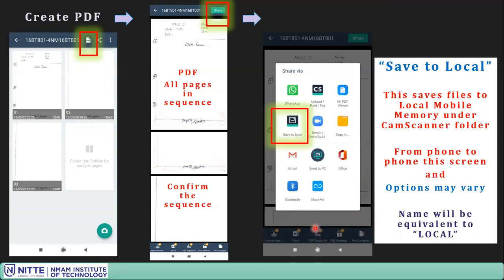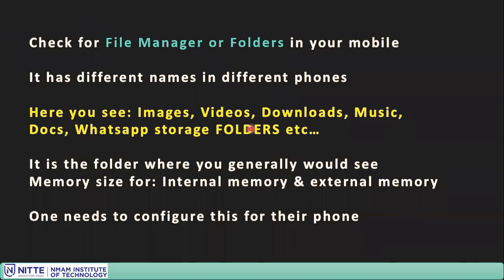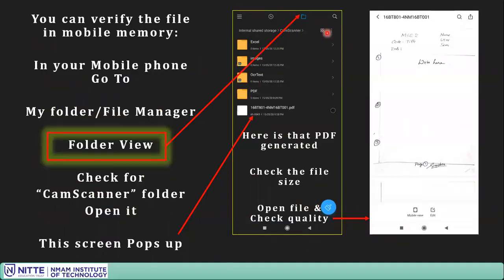Once you click 'Save to Local', a message pops up at the bottom confirming the file is stored at a specific location. The CamScanner part is now complete. Next, you need to verify the file. Open your mobile's File Manager — the name may vary from mobile to mobile — where you can see folders for images, videos, downloads, internal and external memory sizes.